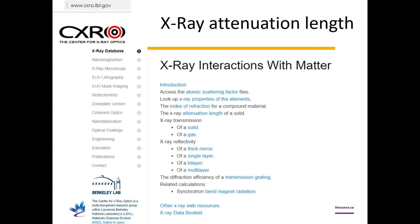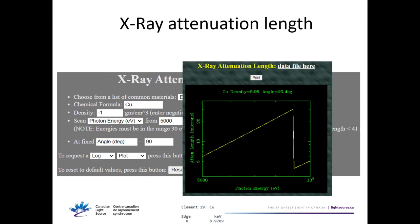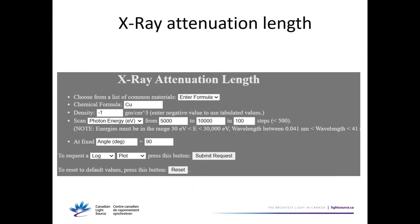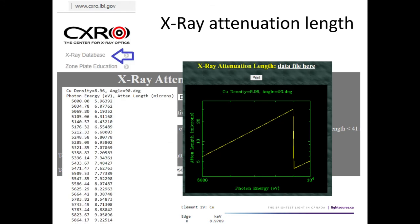The CXRO website — Center for X-ray Optics — has a database for X-ray interaction with matter, including an attenuation lengths database. You fill in your material formula, enter the density if you know it or minus one to use the online density, fill in an incidence angle, and select the energy range. It gives you a plot. For copper, you can see the attenuation length goes up and then falls at the K absorption edge, and clicking gives numerical data.